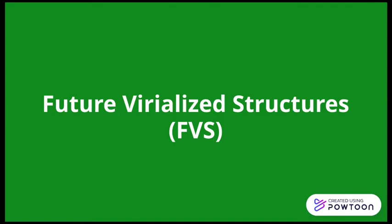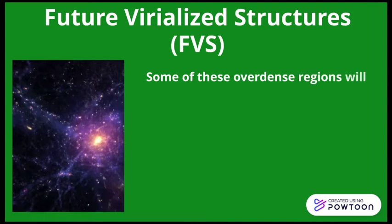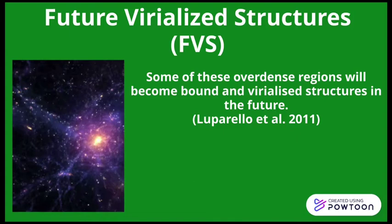The future virialized structure, or just FVS. The intersection of filaments and walls form nodes, which are the densest environment in the large-scale structure. Under the current cosmological model, some of these overdensities will become bound and virialized structures in the future, known as superclusters.